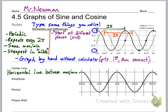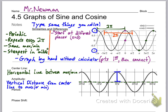Let's talk about the four features of a sine or cosine graph. First, there's the center line — that's the horizontal line between the maximum and the minimum. On this graph the maximum is 1 and the minimum is negative 1, so the center line is along the dashed line y equals 0. The amplitude is the vertical distance from the center line to the maximum, which on this graph is 1. Don't say from the minimum to the maximum — that's twice the amplitude.